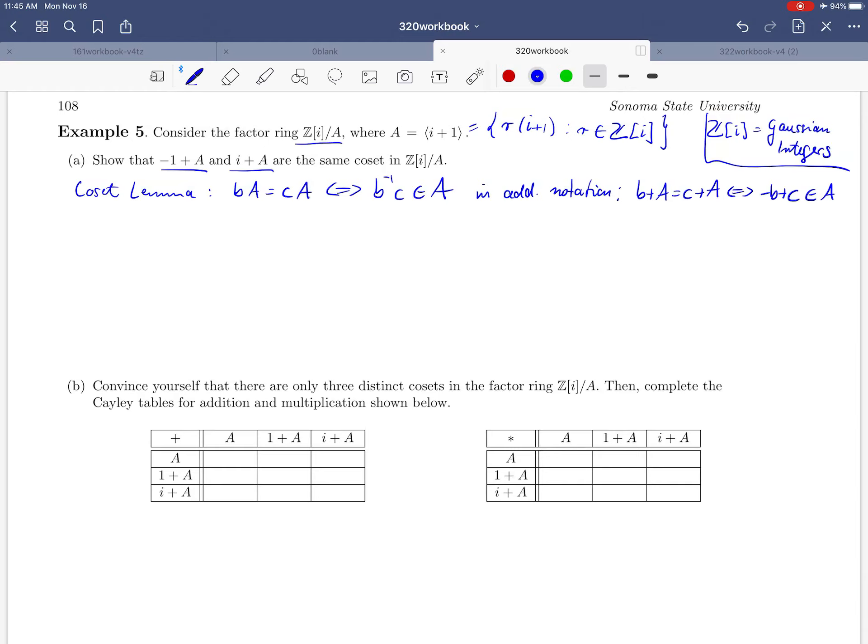In our case we are looking at minus 1 plus A and i plus A. So we want to show minus 1 plus A is equal to i plus A. But by our coset lemma, that's an if and only if 1 plus i is an element in A. And it certainly is, since A is the ideal generated by 1 plus i.